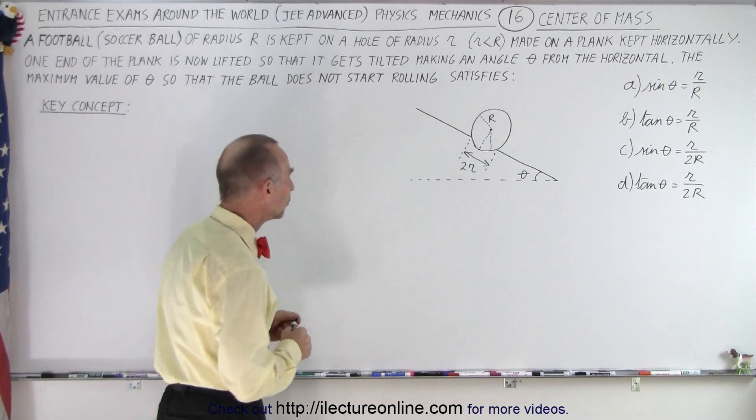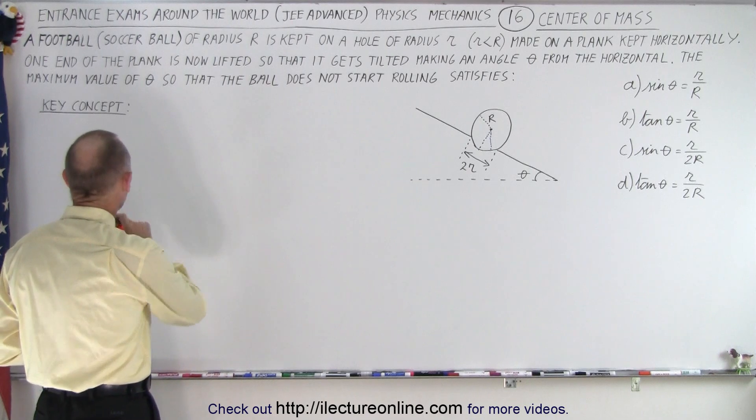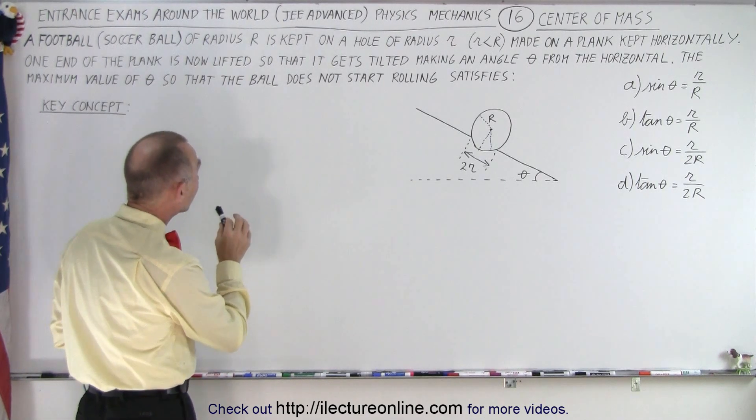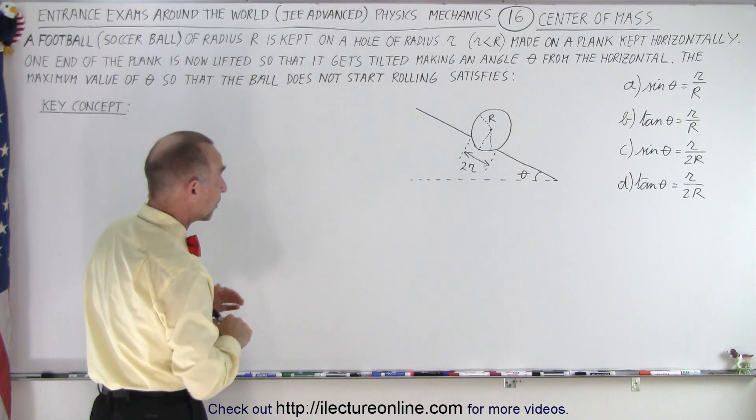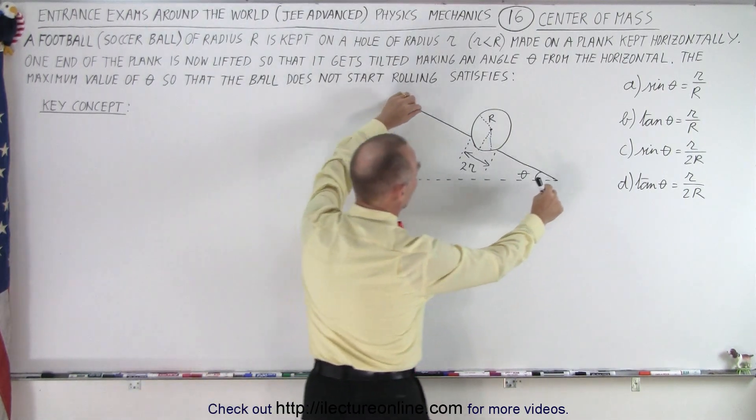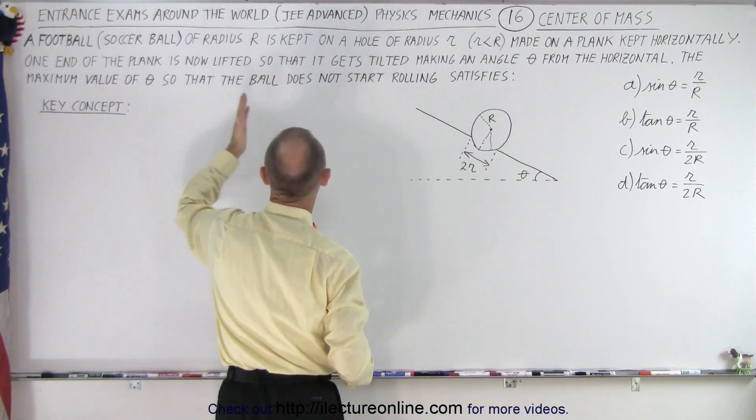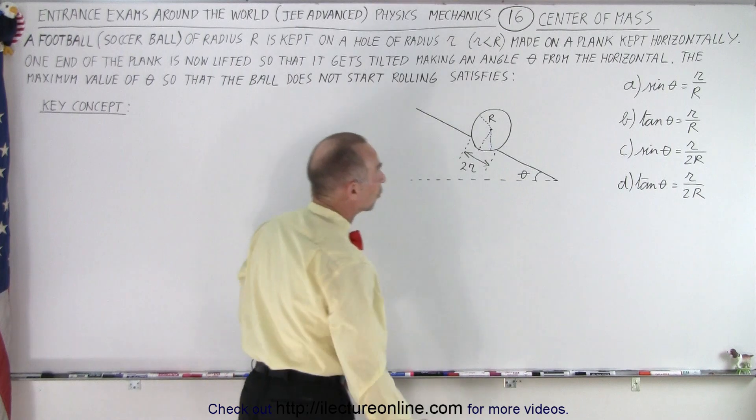So let's read the problem to see the association with the center of mass. We have a football, also known as a soccer ball in the United States, of radius R kept on a hole of radius small r, small r being smaller than big R, made on a plank kept horizontally. So here we have the situation where it starts out horizontally. Then one end of the plank is now lifted so that it gets tilted, making an angle of theta from the horizontal.